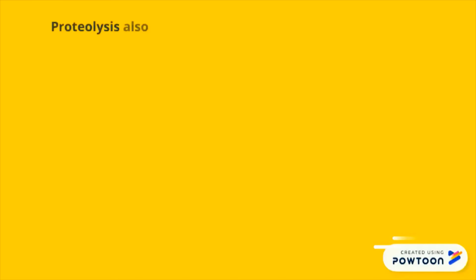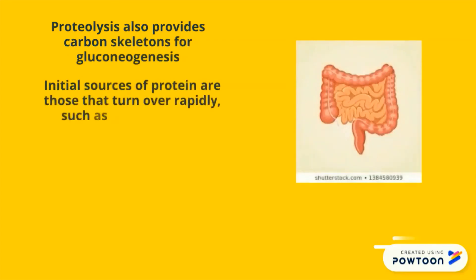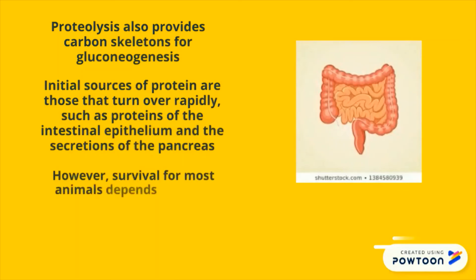Proteolysis also provides carbon skeletons for gluconeogenesis. Initial sources of proteins are those that turn over rapidly such as proteins of the intestinal epithelium and the secretions of the pancreas.